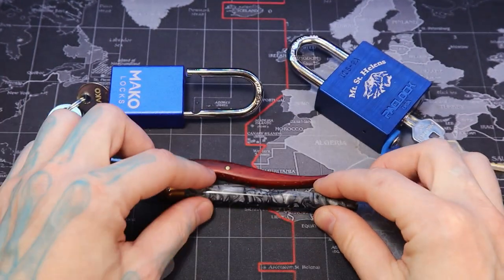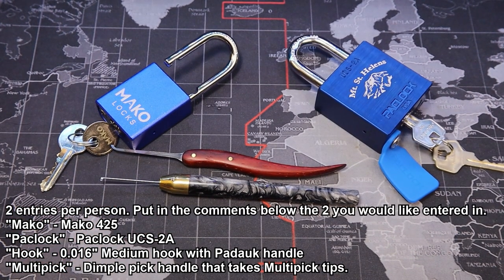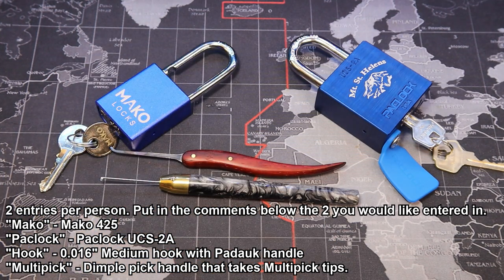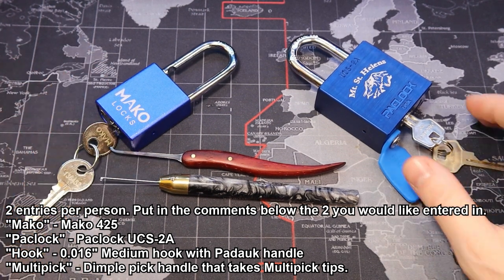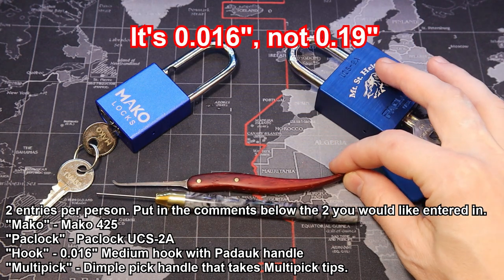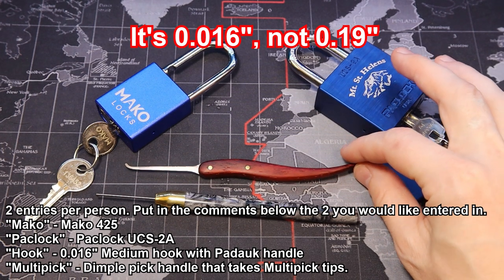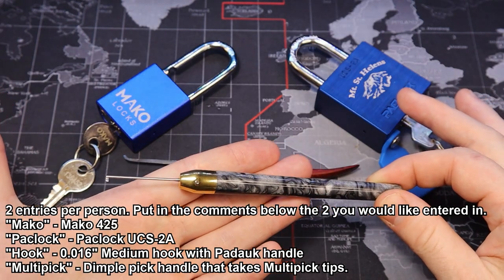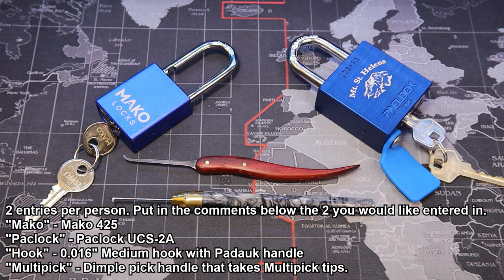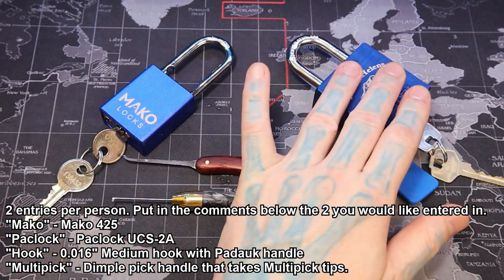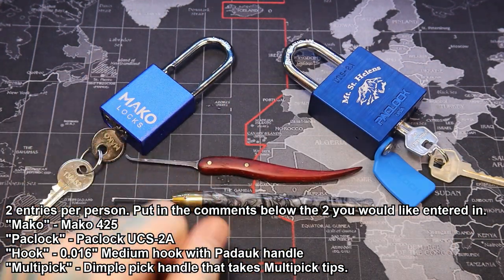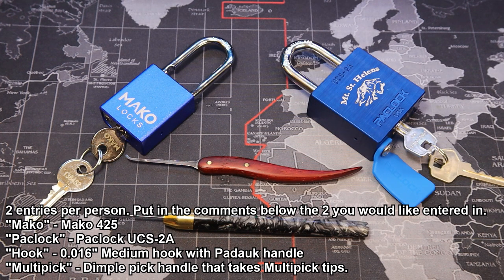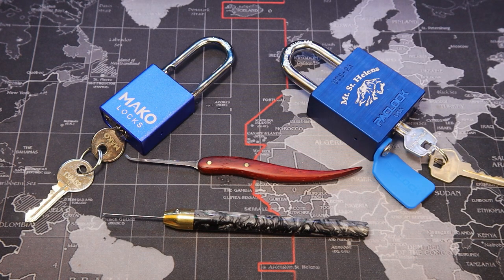Everybody gets two entries, so you can have your chance of getting two items, or one, or if you're unlucky, none. But you know how it goes with giveaways. So type two things below that you want. If you want the Mako 425, type Mako down below. If you want the PacLock UCS-2A, type PacLock. If you want the medium 19 thousandths medium hook PacLock handle, type hook down below. And if you want the interchangeable dimple pick flag handle, type multi-pick down below. Again, everybody gets two entries, so you can type two items. I figured since I'm giving away four items, let's just make it a little bit different and fun. Again, I will announce the winners when I get back in three weeks after DEF CON and a little road trip.